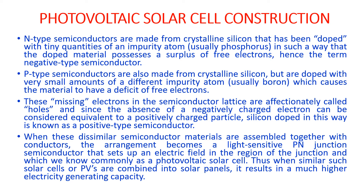Silicon doped this way is known as positive-type semiconductor. When these dissimilar semiconductor materials — one doped with phosphorus, the other with boron — are assembled together with conductors, the arrangement becomes a light-sensitive p-n junction semiconductor that sets up an electric field, and thus we generate electricity from this system.